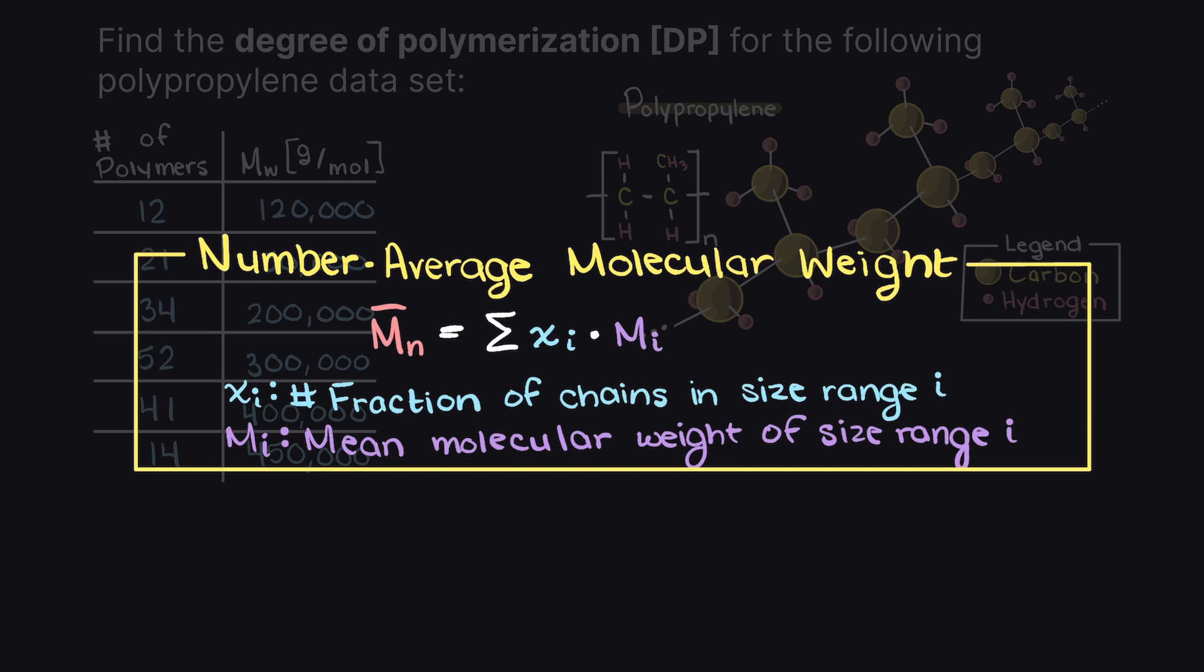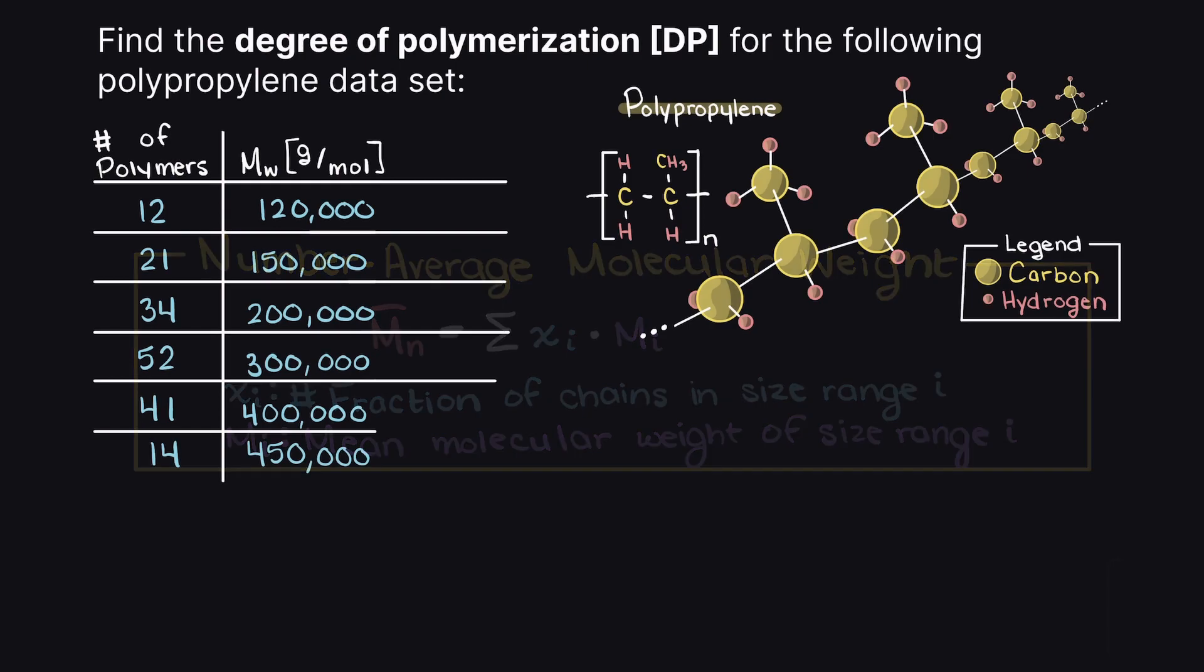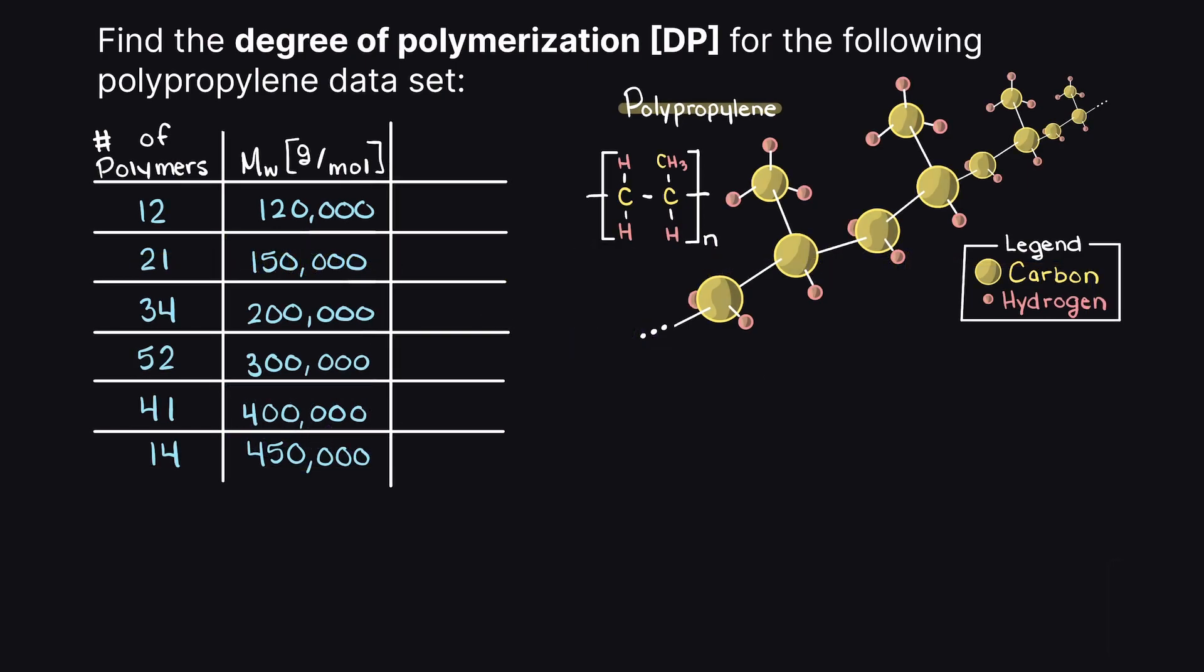So, this will tell us where the majority of our polymer sizes are. It will not tell us the average molecular weight of all of our polymers in our sample. So, let's determine the total number of polymers that we have. This is simply done by summing all of the polymers in this column. Now, we can show the number fraction of each polymer range by dividing the number of polymers for each molecular weight by the total number of polymers in our sample.